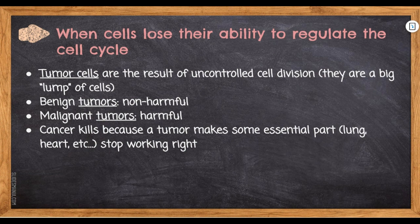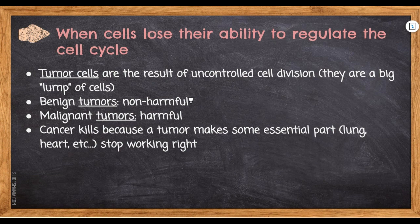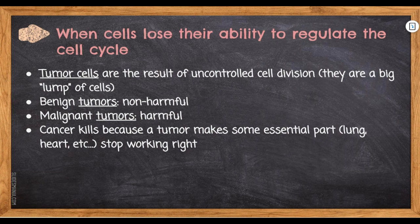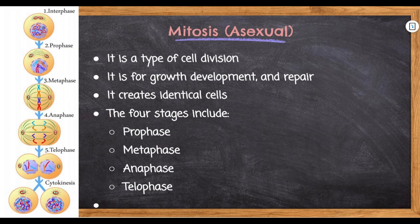When cells lose their ability to regulate the cell cycle, you get tumor cells, which can lead to cancer. Tumors are the result of uncontrolled cell division — a cell is supposed to die but keeps growing. Benign tumors are not that harmful because they stay in one place. Malignant tumors are harmful because they travel and spread throughout the body. Cancer kills because the tumor makes essential parts like the lungs and heart stop working — all those extra cells demand blood and nutrients, stealing resources away from vital organs.